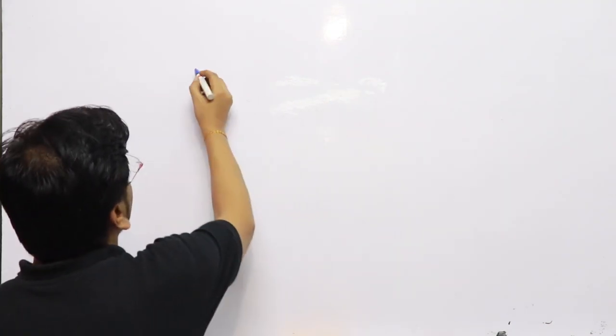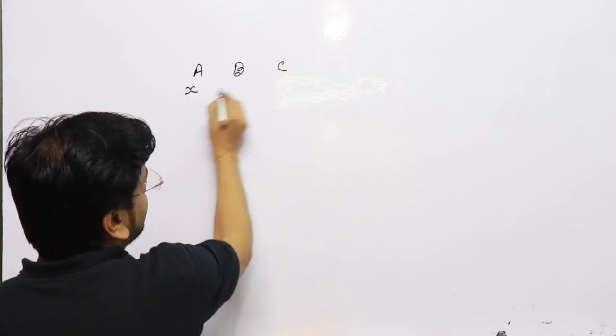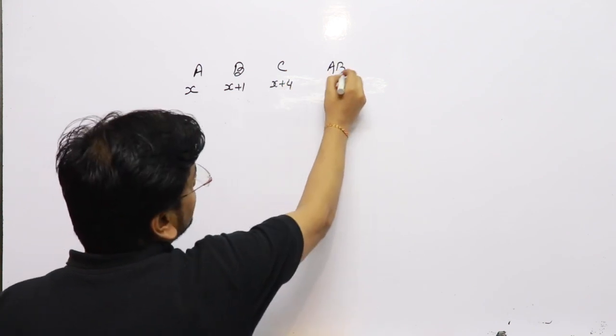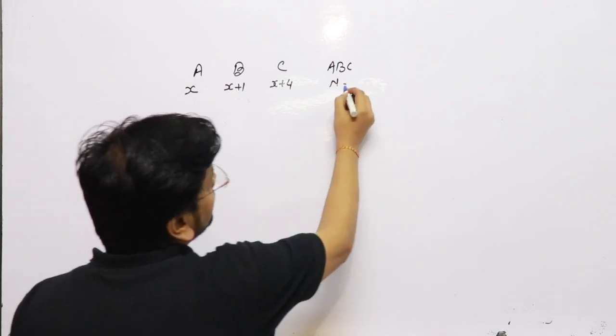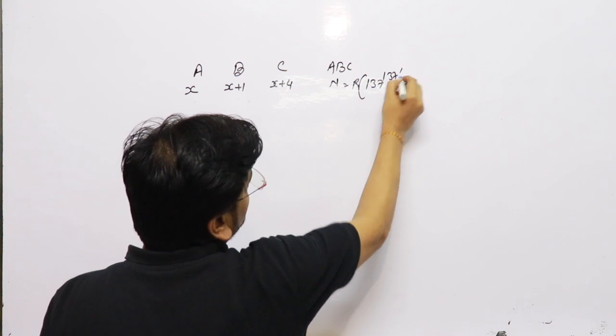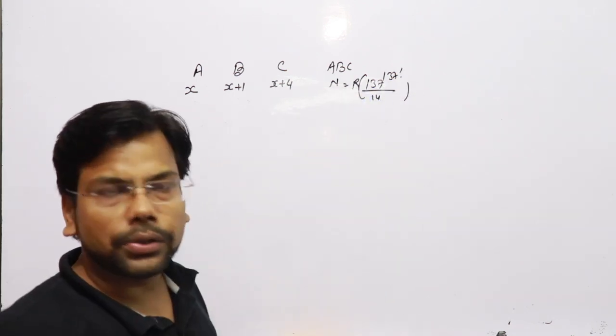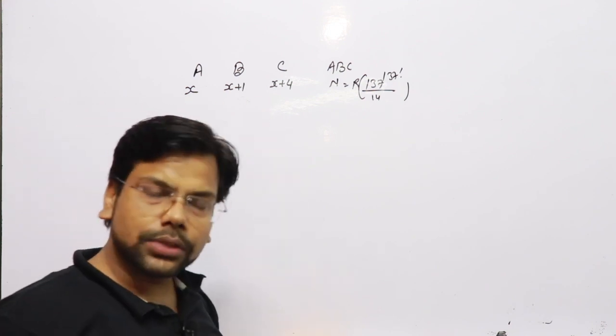The data is given: we have A, B, C. A takes x days, B takes x+1 days, C takes x+4 days, and together they are taking n days where n is the remainder when 137^(137!) divided by 14. First of all it's a question of remainder theorem, then time and work, and we have a variable so it's a question of algebra.